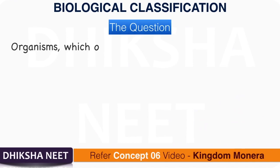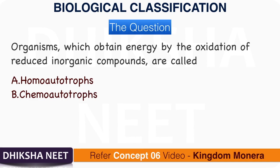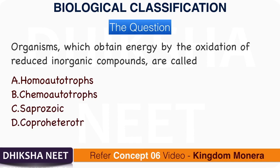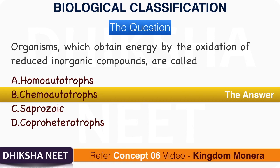Question 11: Organisms which obtain energy by the oxidation of reduced inorganic compounds are called: A. Homototrophs. B. Chemototrophs. C. Saprozoic. D. Copoheterotrophs. The answer is option B, Chemototrophs.